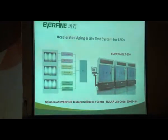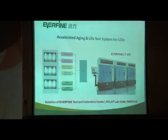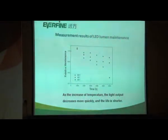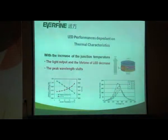As to the main instrument, this is the equipment produced by Everfine — this is also the solution of the Everfine Test and Calibration Center, which has been accredited by NVLab, a national accreditation program of the US. This is the main result of lumen maintenance made by this equipment. From this figure, we can see that as temperature increases, the light output will decrease more quickly, which means lifetime is quite dependent on temperature.